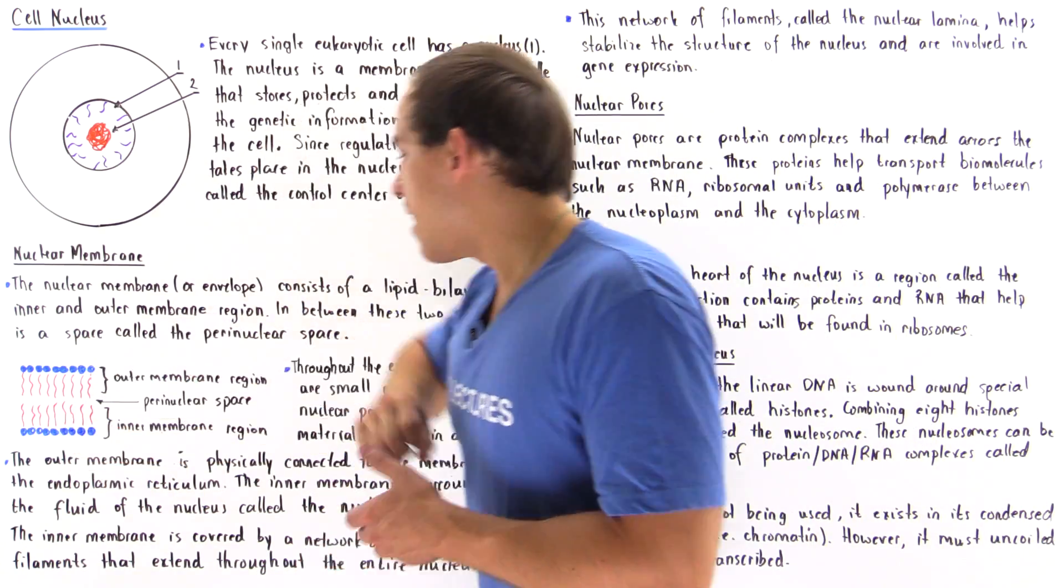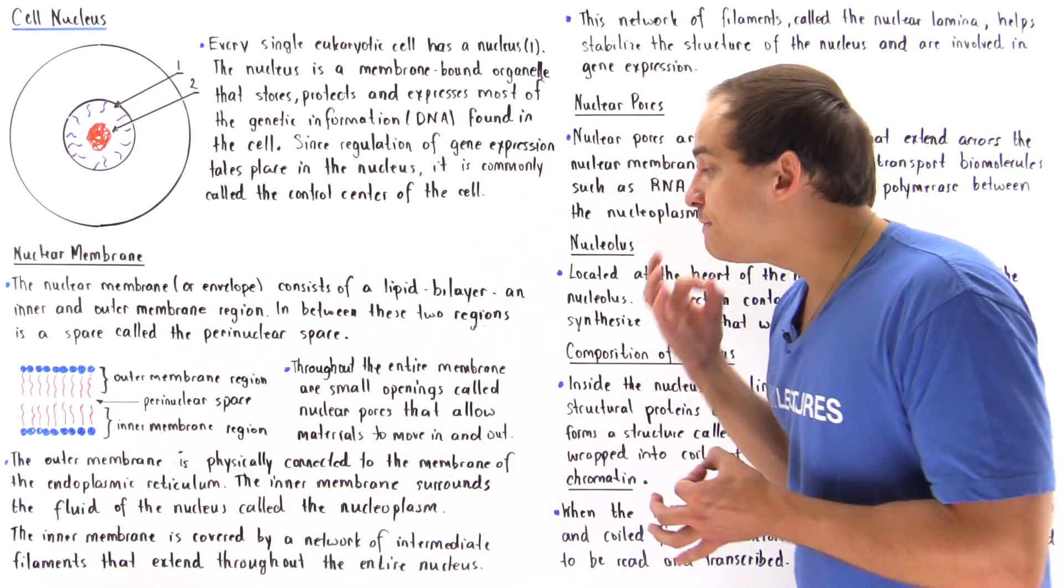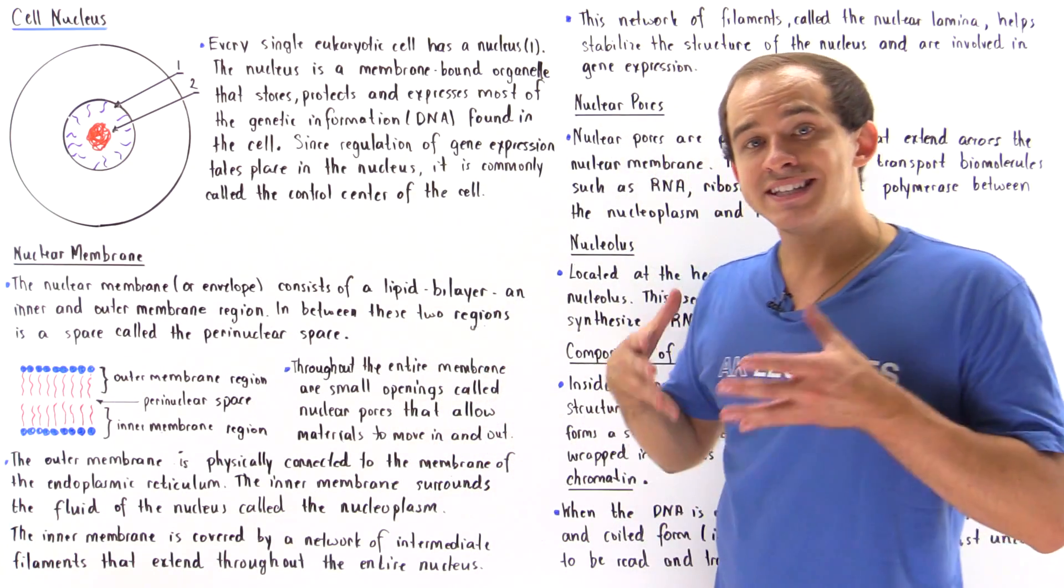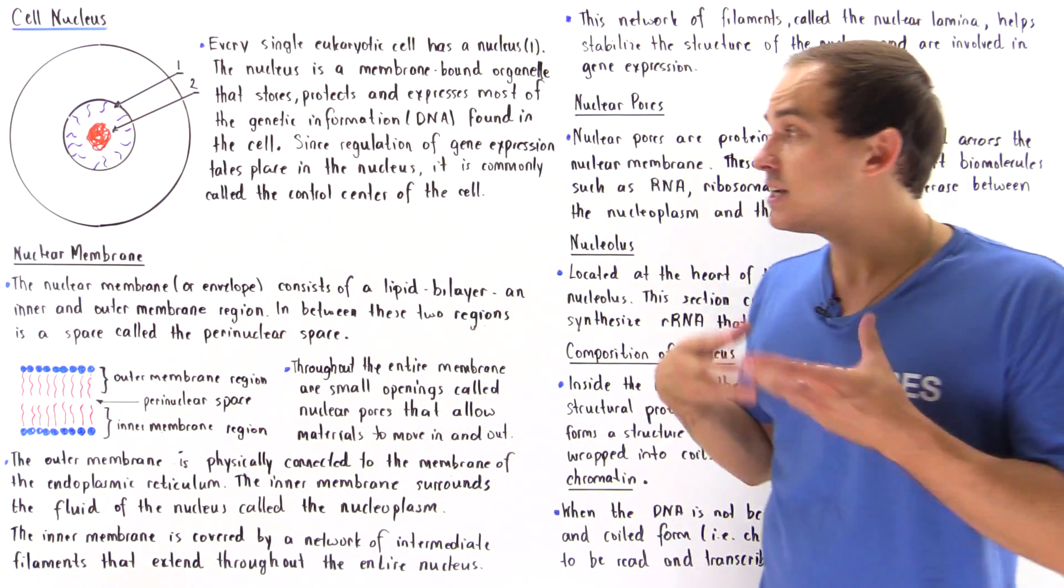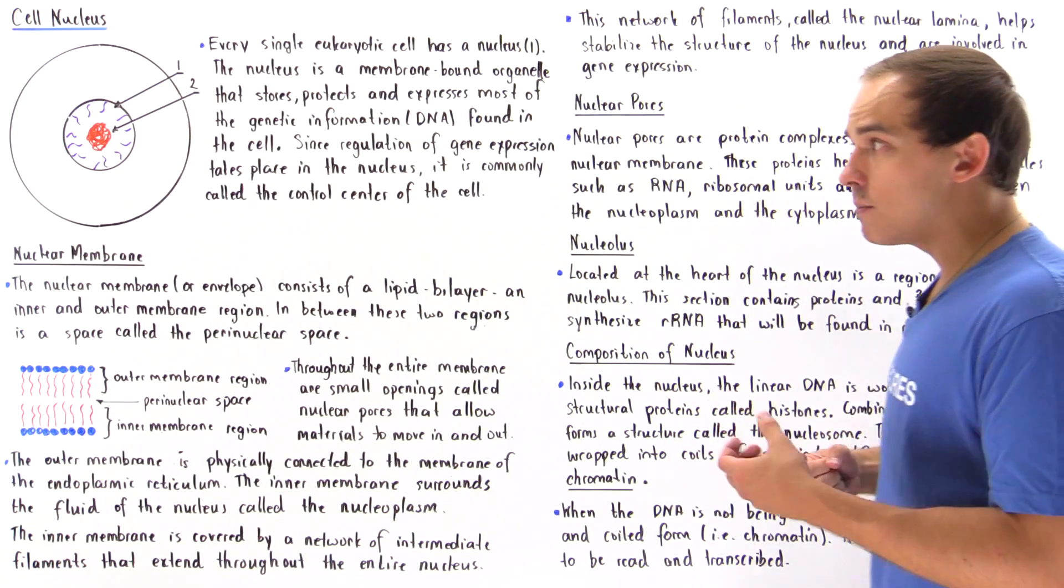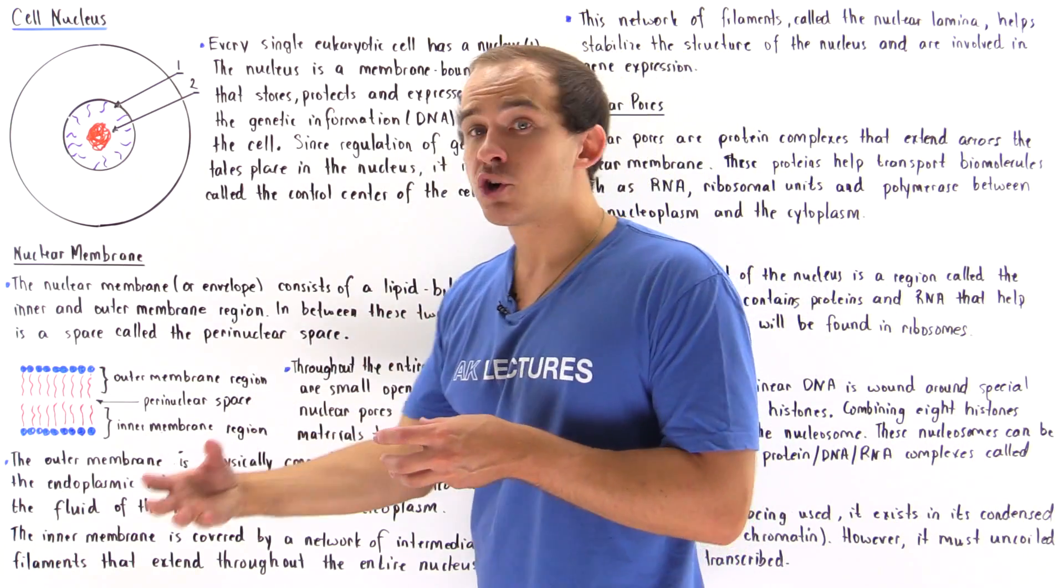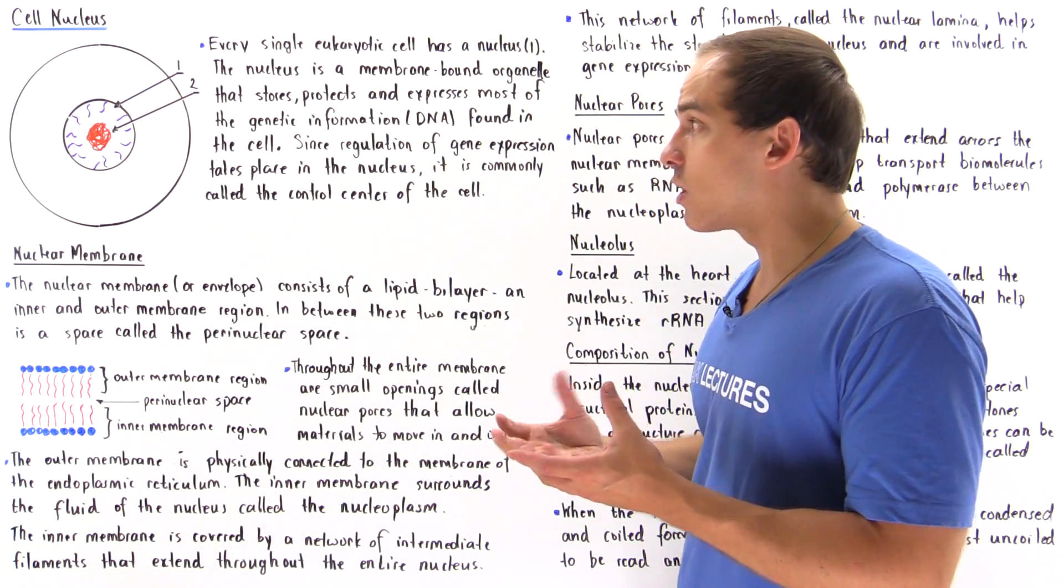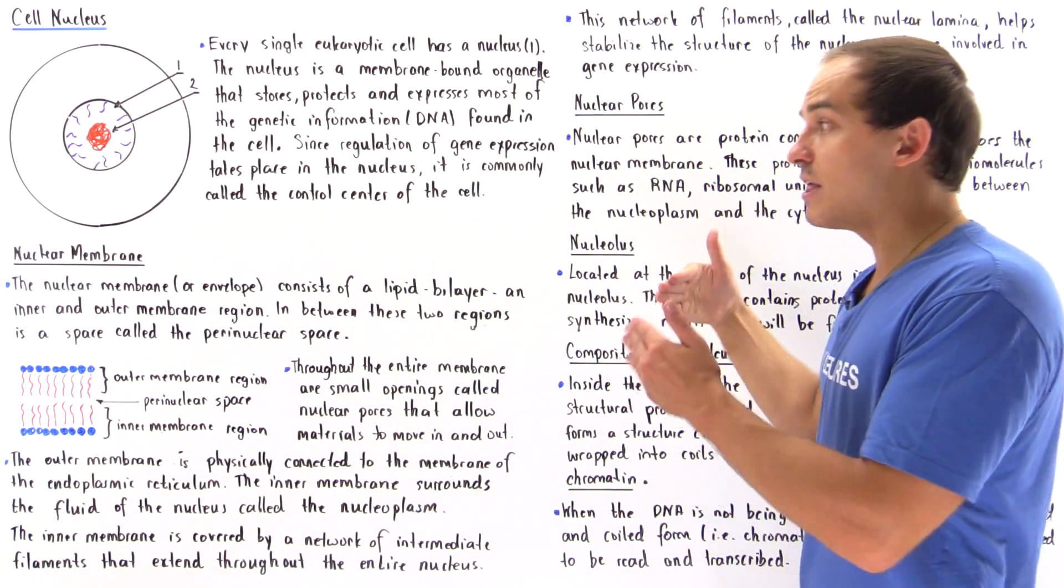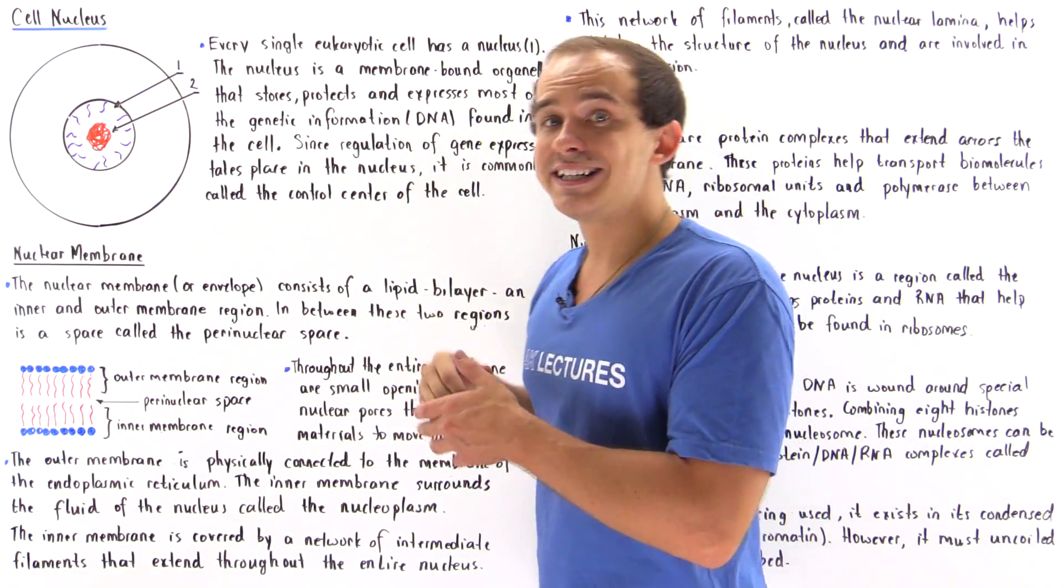The outer membrane is actually physically connected to the membrane of the rough endoplasmic reticulum. This is important because when we synthesize ribosomal RNA, we have to have a quick way to transport our RNA from the nucleus to our endoplasmic reticulum. And that's why they are connected.